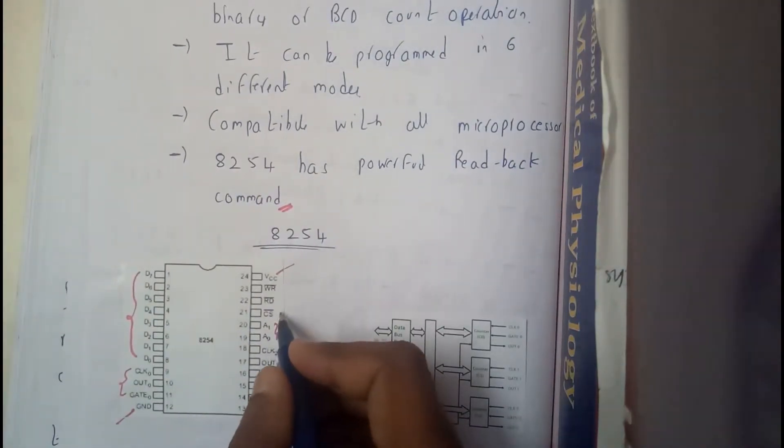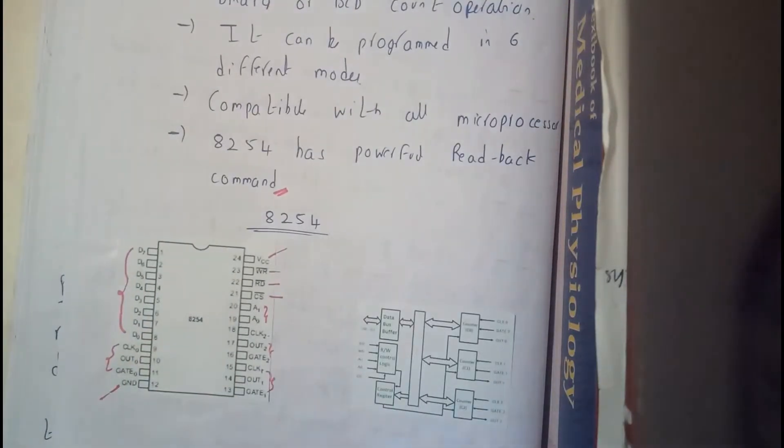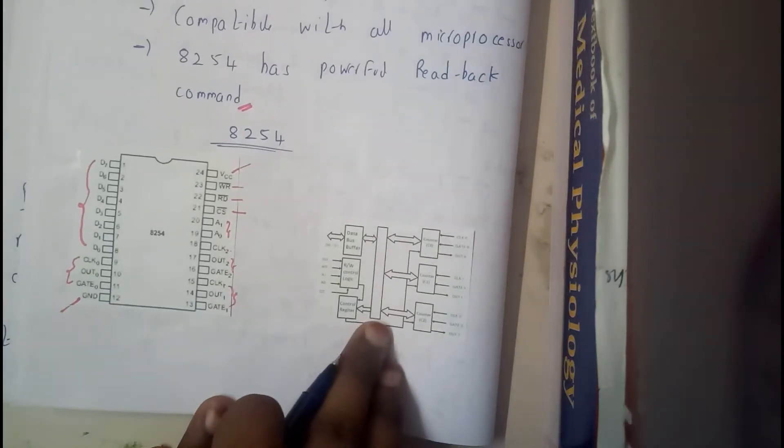Here we will be having address line A0 and A1, chip select, read, write. So now I hope everyone got a small idea on this diagram.